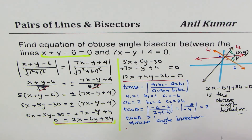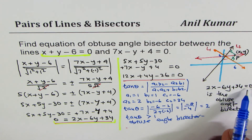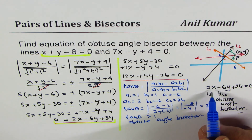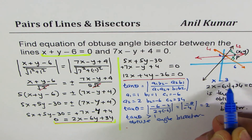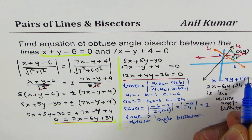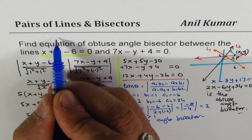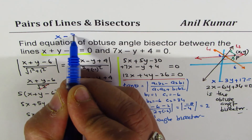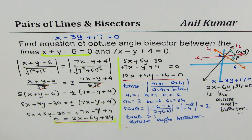Also note that you should simplify the equation 2x minus 6y plus 34 equals 0. Dividing through by 2 gives x minus 3y plus 17 equals 0. So the final answer is x minus 3y plus 17 equals 0 — that is the obtuse angle bisector for the given two lines.